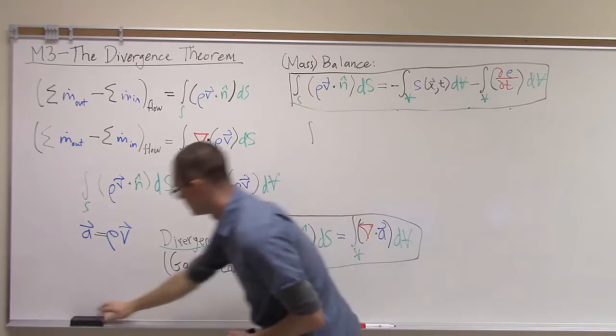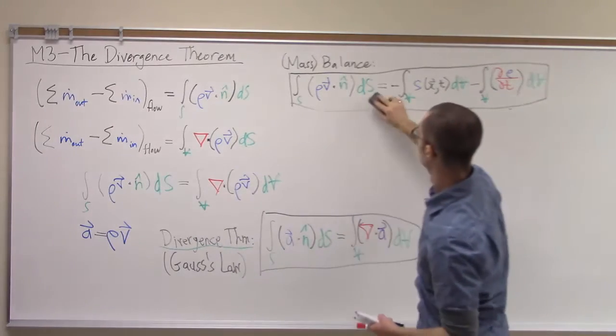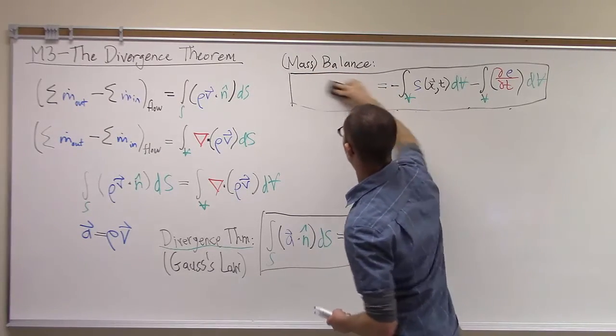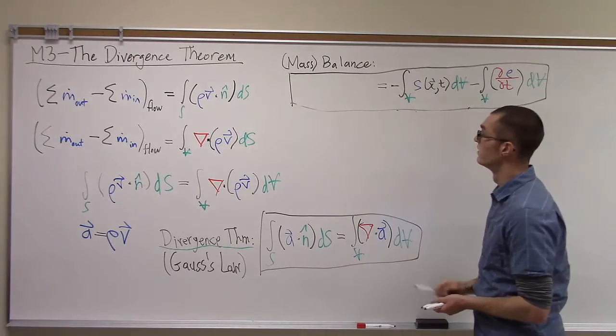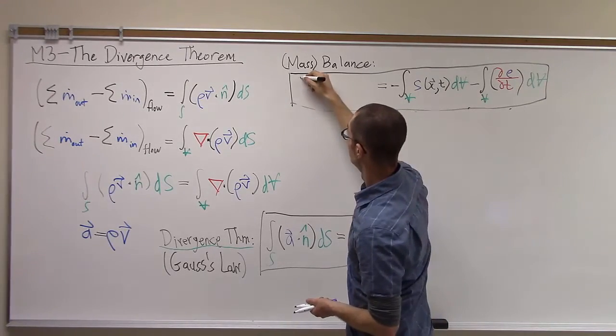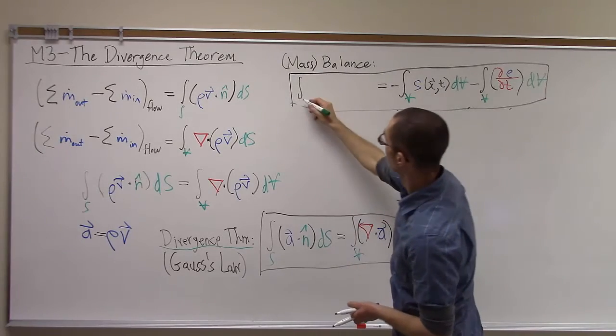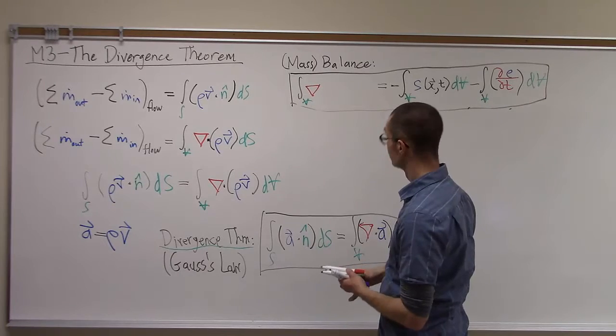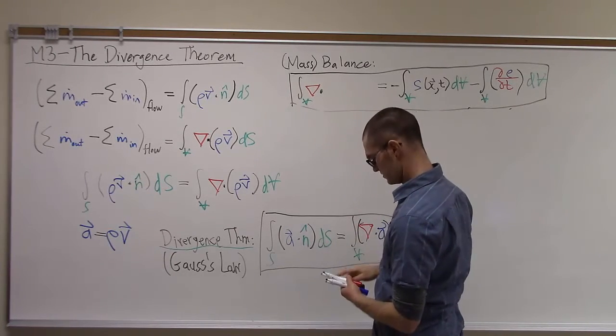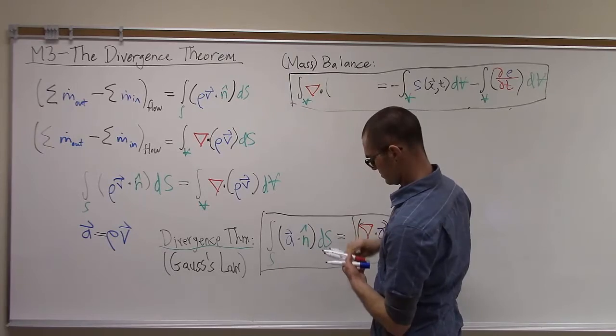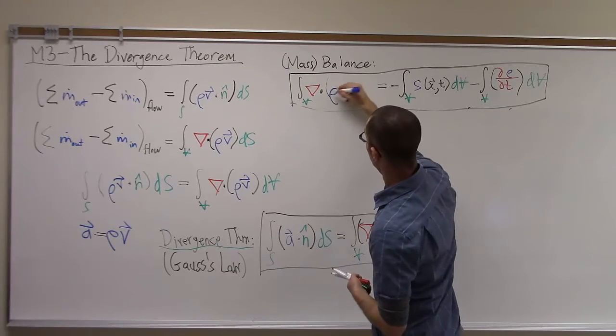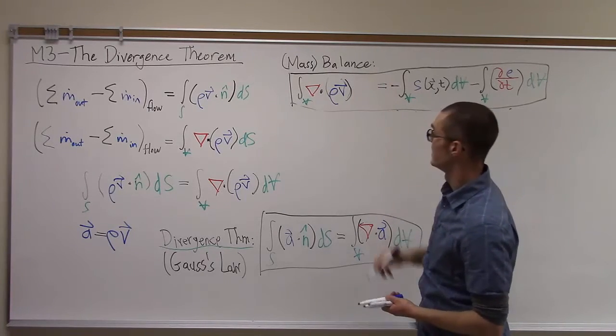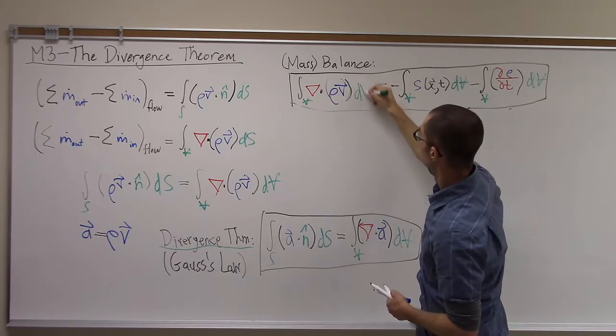So I can replace that surface integral, which was there previously, with the integral over the volume of the divergence of ρV. That's our vector field in this case - we define A as ρV, dV.